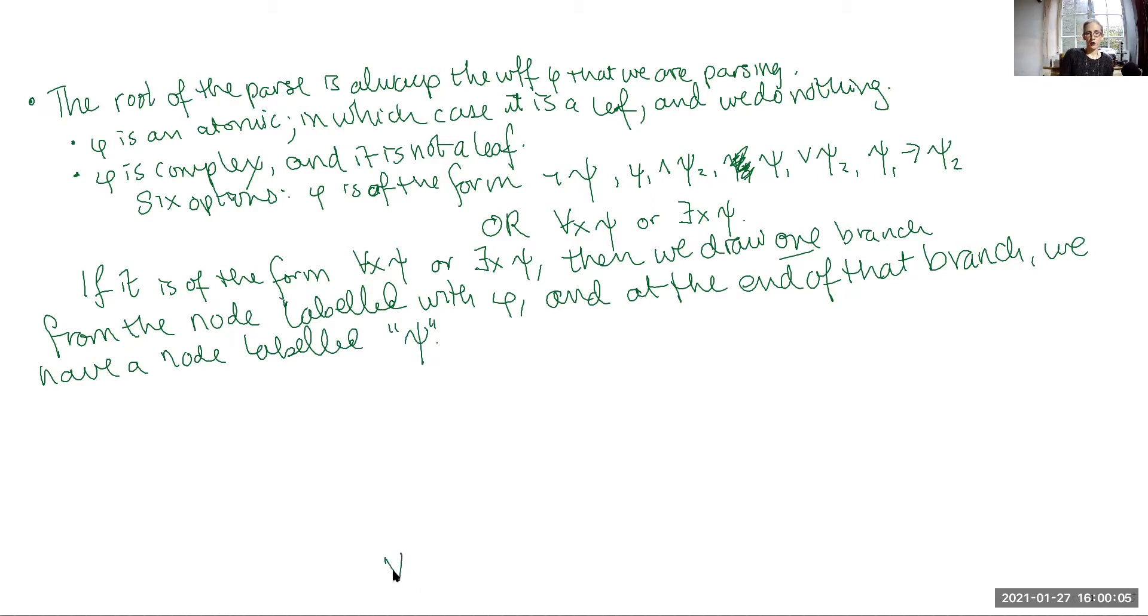So let's just do a very quick example. Say that I've got for all x, there is a y, r x y, or r y x, if that is the case, then r x x. So you don't need to worry about what this sentence says, because parse trees are a purely syntactic thing. We're only looking at the structure of the sentence. So this is not an atom. Therefore, the root of the tree will have branches growing out of it.